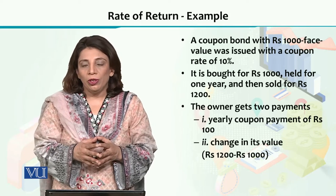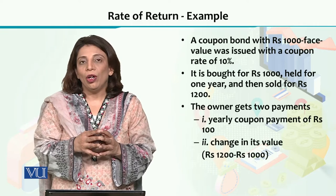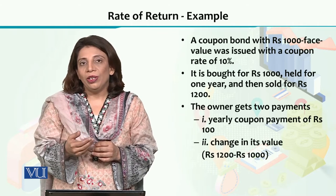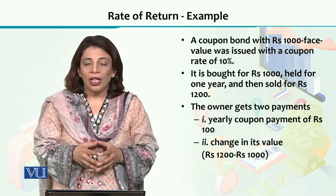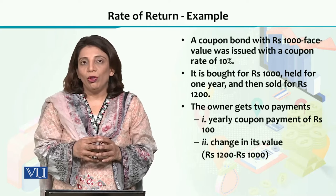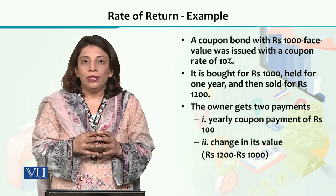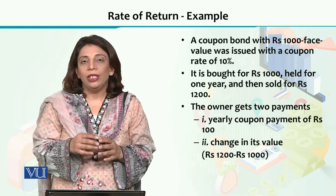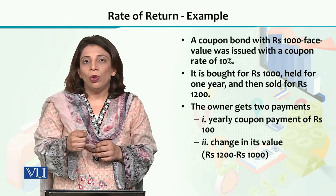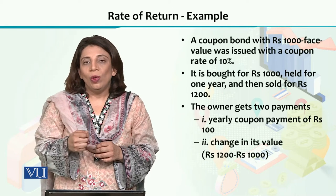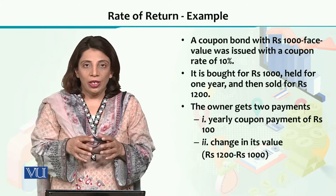When we talk about the rate of return, we are going to take an example to understand how it can be calculated. We have a coupon bond — we have already discussed the concept of a coupon bond. Its face value is rupees 1000 and the coupon rate is 10%, which means that after every year the person who owns the bond will get 10% of the face value, which is rupees 1000 in this example.